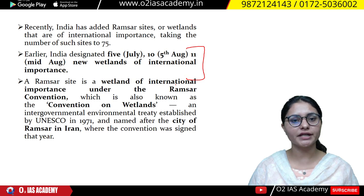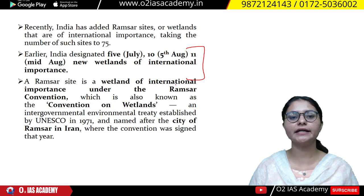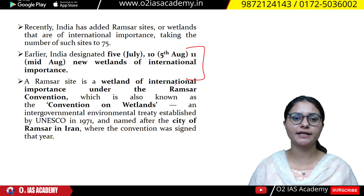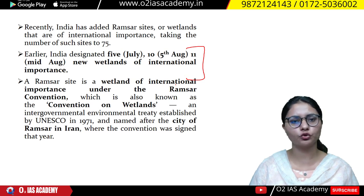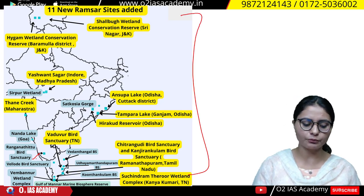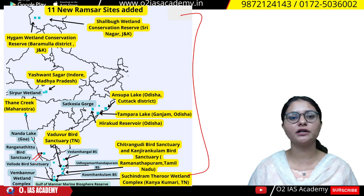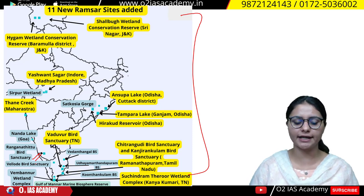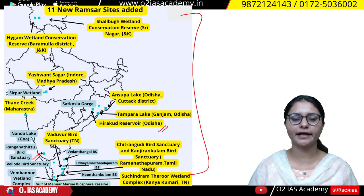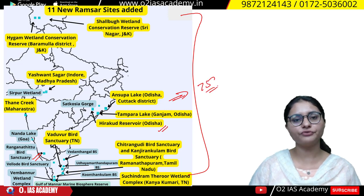If I talk about the Ramsar site convention, this is a convention that was signed in 1971 in Iran, which is called Ramsar. Here there is a particular type of ecosystem — wetlands — and those wetlands are included in the Ramsar site. The sites shown in blue color have been added in August, and those shown in yellow color were added earlier, bringing our total to 75 Ramsar sites after 11 new additions.